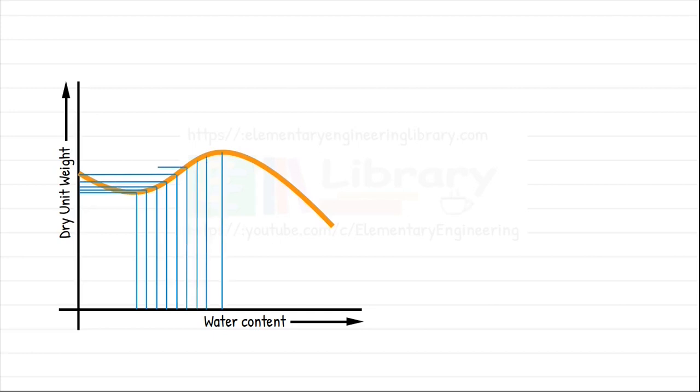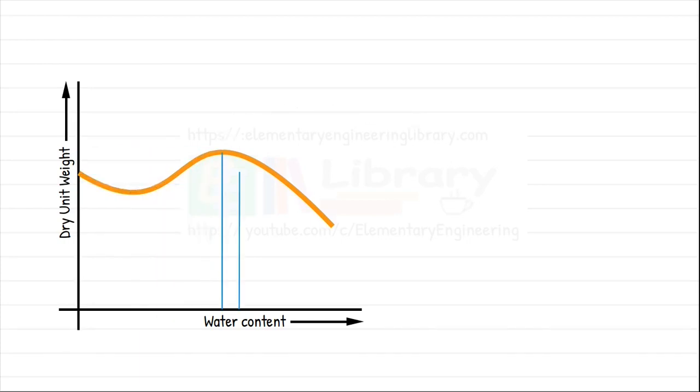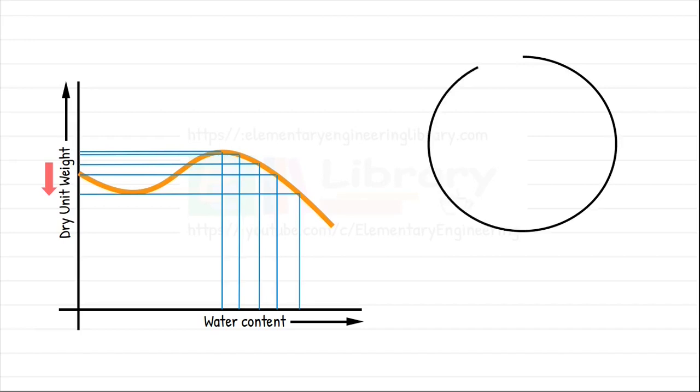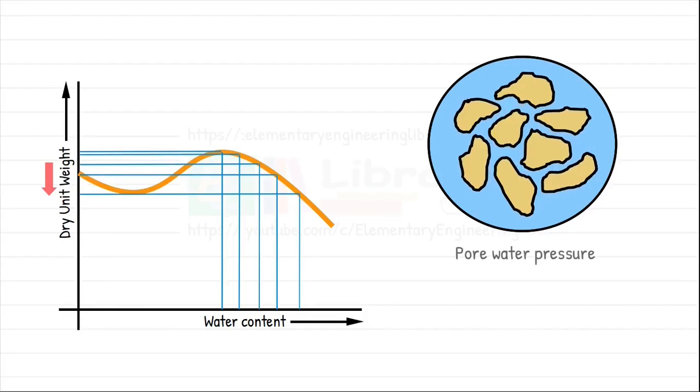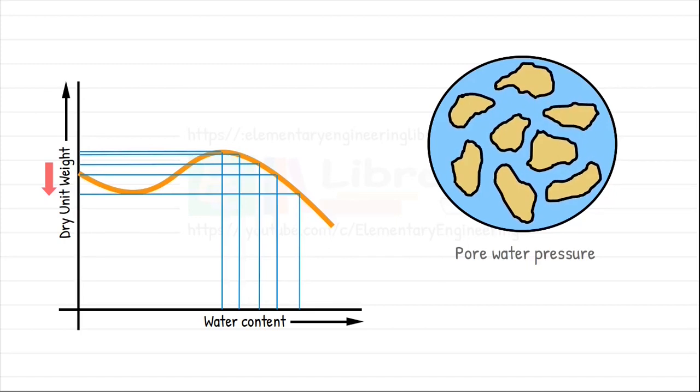Again, the dry density of sand keeps on increasing until sand becomes fully saturated. If the water content is increased beyond this point, the dry density again decreases because water that fills the voids in the sand now applies a pressure called pore water pressure on soil particles and pushes them away, which again increases the volume of sand and hence dry density decreases.